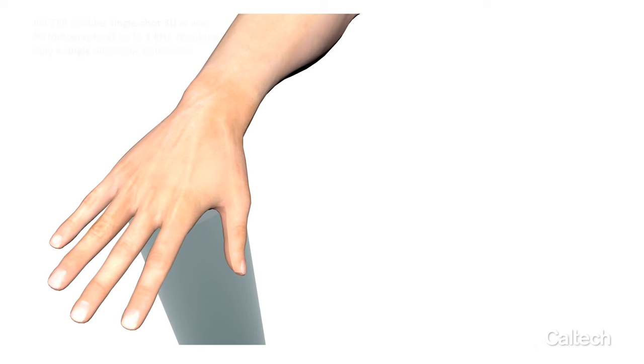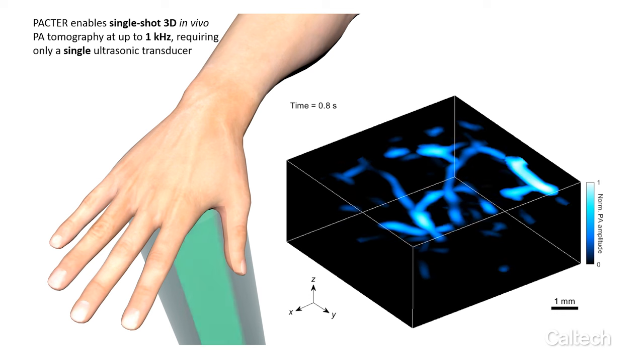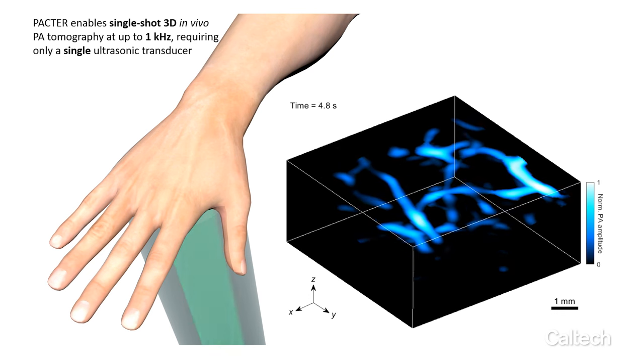In this work, we show that PACTER enables single-shot 3D in vivo photoacoustic tomography with an imaging speed of up to 1,000 volumes per second. These are all accomplished by a single-element ultrasonic transducer.